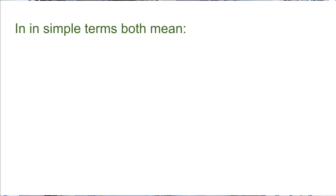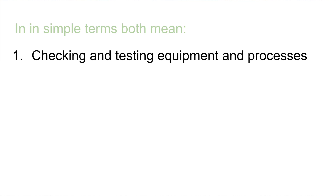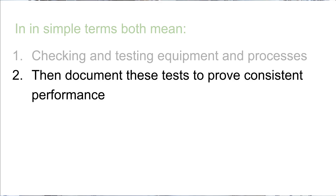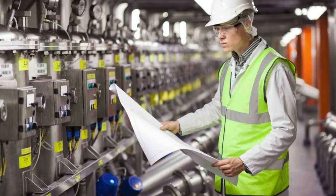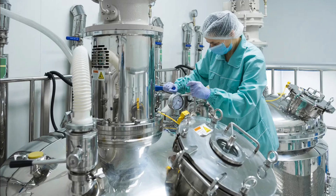People often use the terms interchangeably, but they are actually slightly different. In simple terms, both mean checking and testing equipment or processes to make sure they work properly, then you document these tests to prove they consistently perform as expected. However, the term qualification is normally used for equipment and utilities, and the term validation is used for processes.